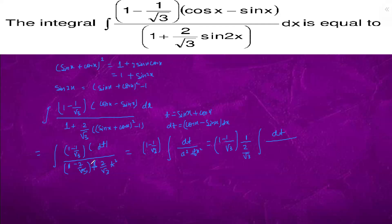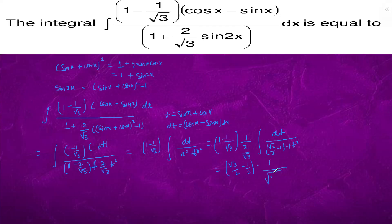We divide by 2 by root 3 and multiply by root 3, giving root 3 by 2 minus 1 plus t square. This is of the form t square plus a square. We calculate: it will be root 3 by 2 minus 1 by 2. So the result is 1 upon root of (root 3 by 2 minus 1) times tan inverse of t upon root 8.